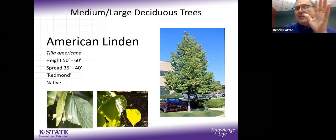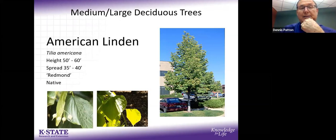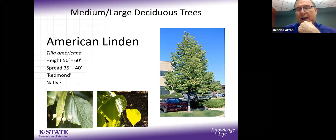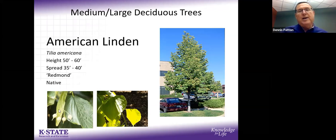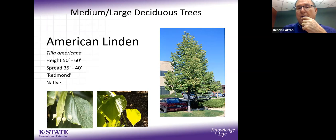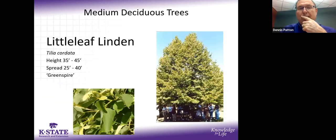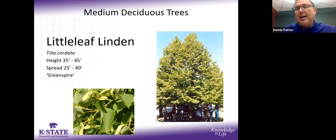Moving to medium trees: linden is a beautiful, fairly fast-growing tree native to eastern/southeast Kansas. The main drawbacks are two: Japanese beetles love them and will defoliate them (though they recover), and the flowers are extremely fragrant — almost to the point of nauseating — while also drawing many pollinators. Little-leaf linden is a slightly more compact variety. Unfortunately, both are losing favor in our climate due to Japanese beetle pressure.